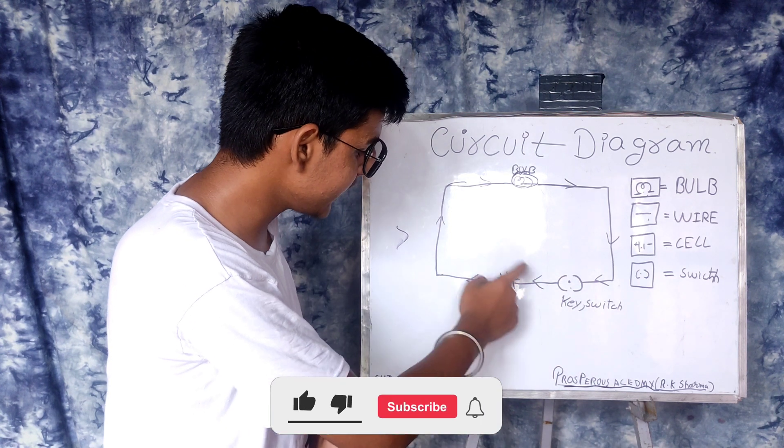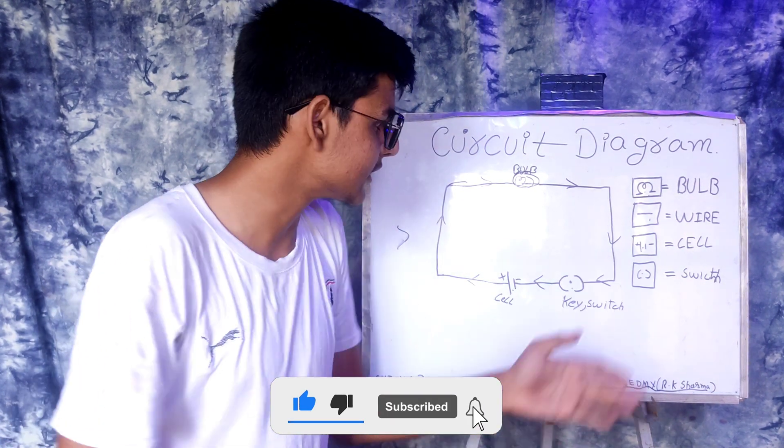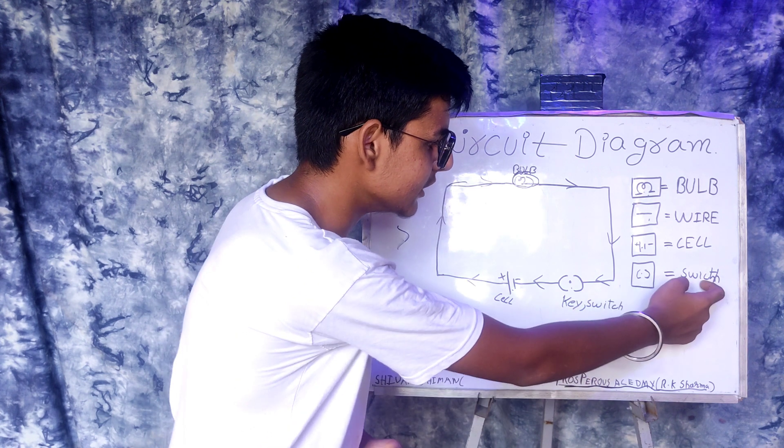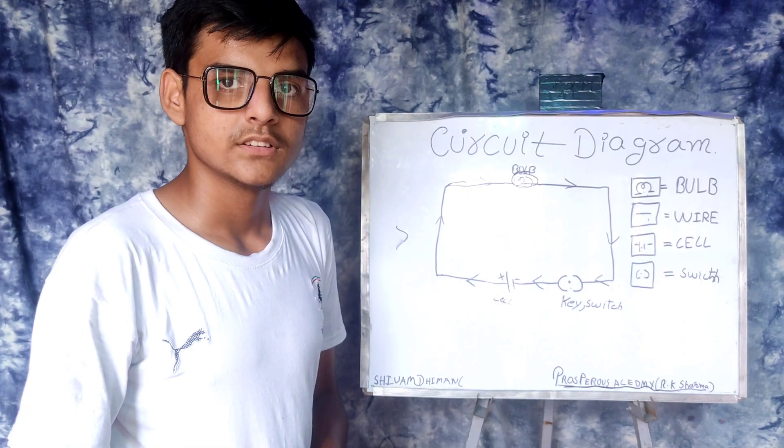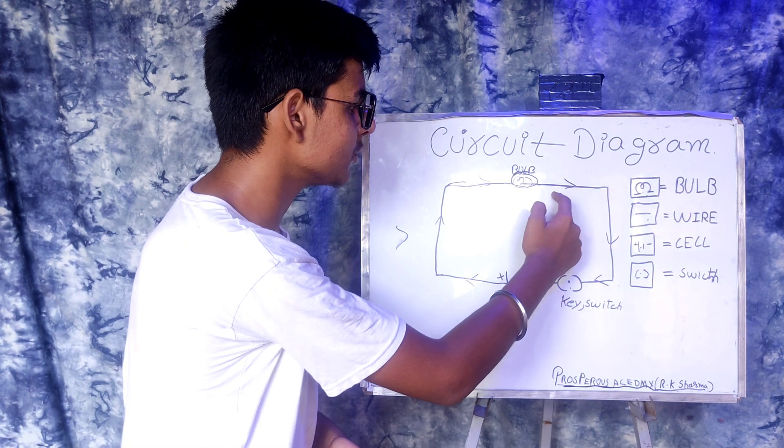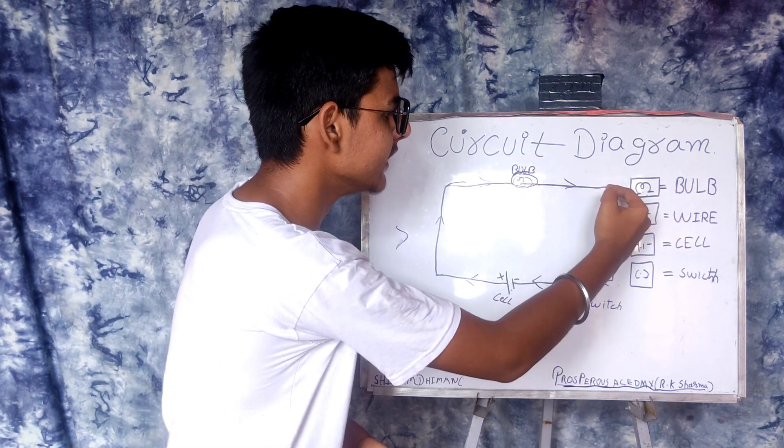Fourth, last, this symbol represents the switch. Here is the switch in this circuit. And these arrows are showing that the current is flowing in this direction.